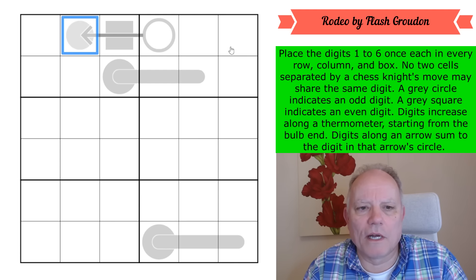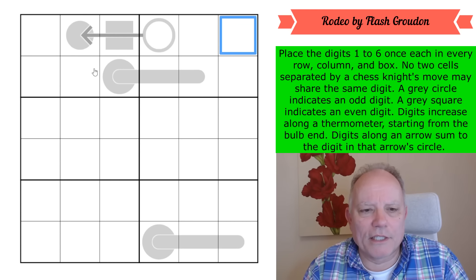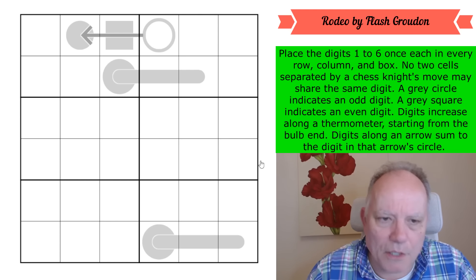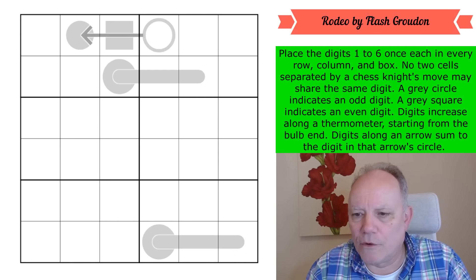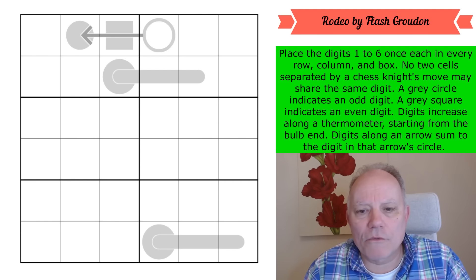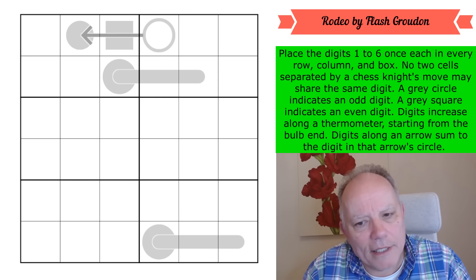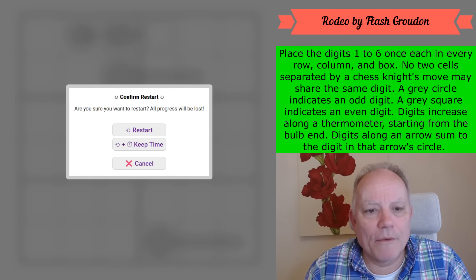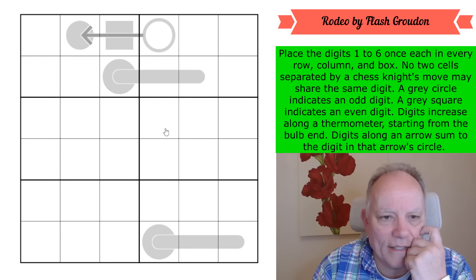I might even change the colors for the version you get to solve so that the circle is orange for an odd number, just so it's differentiated from thermo bulbs. Those are the rules. Flash suggested that this was a relatively approachable puzzle, so let's get cracking.